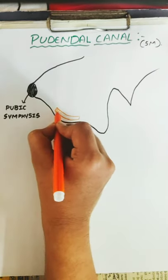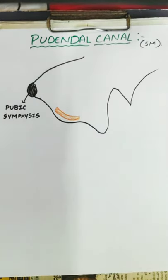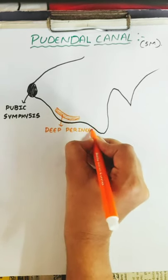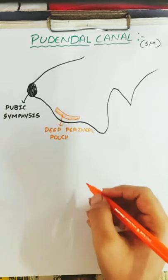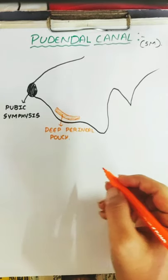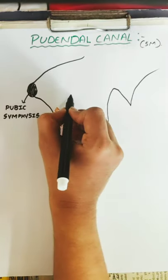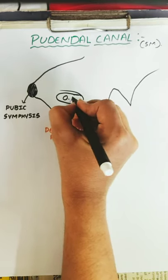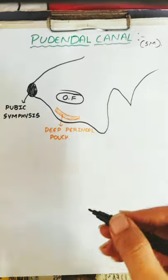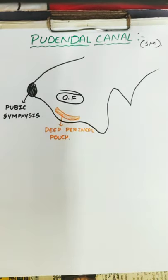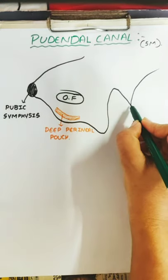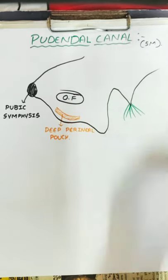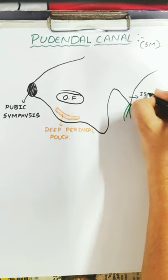This is the deep perineal pouch. And remember another one — there is a foramen here. This foramen is called the obturator foramen. After that, you can see here this is the ischial spine.